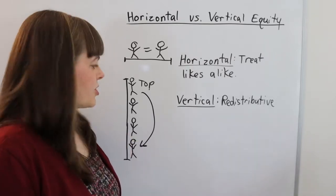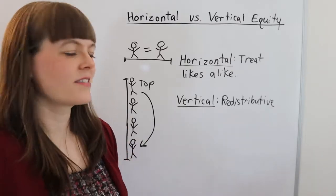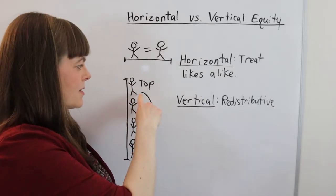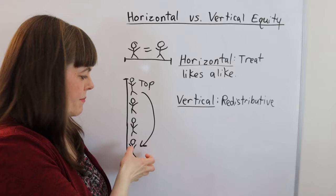But it doesn't just have to do with money, because we have the words regressive and progressive, where progressive tax systems capture the movement of resources from the top to the bottom.